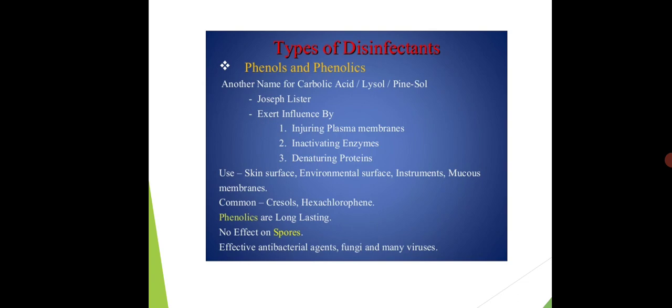This was first found by Joseph Lister. If we see its mode of action, it exerts influence by injuring plasma membrane, bacteria's plasma membrane. It attacks the enzymes and inactivates bacteria. It inactivates the enzymes which are responsible for bacteria reproduction. Third is by denaturing protein.